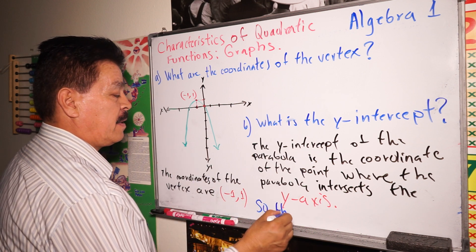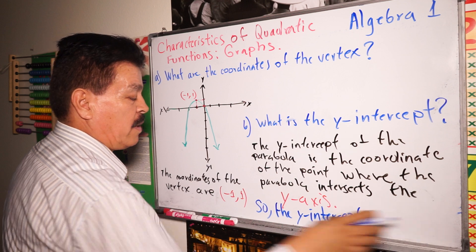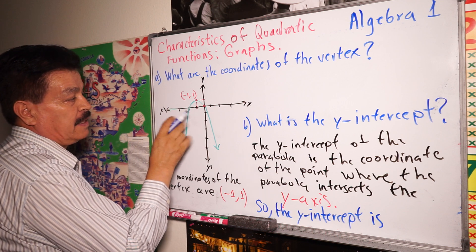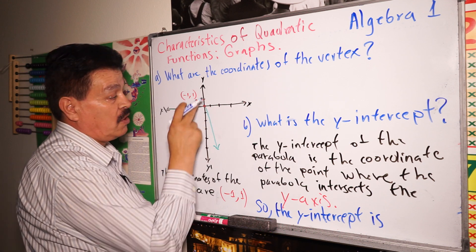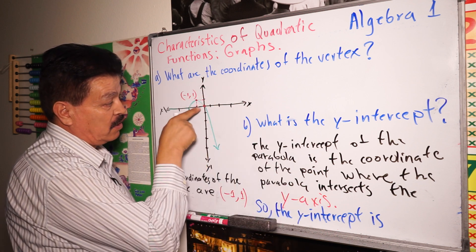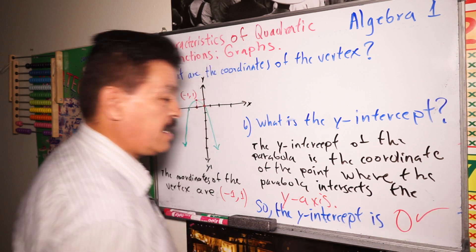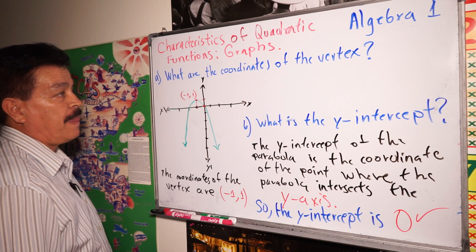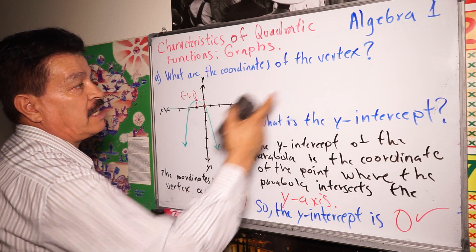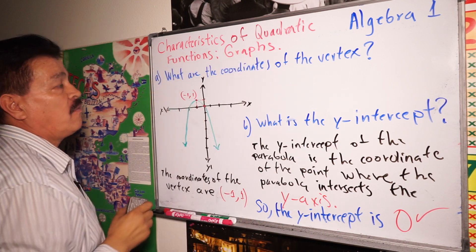So the y-intercept is where the parabola crosses the y-axis. The y-axis is right here, so the y-intercept in this case is zero. I'm going to erase this problem. So what I'm teaching today: where are the coordinates of the vertex of the parabola, and where is the y-intercept — two characteristics of the quadratic function in graph.